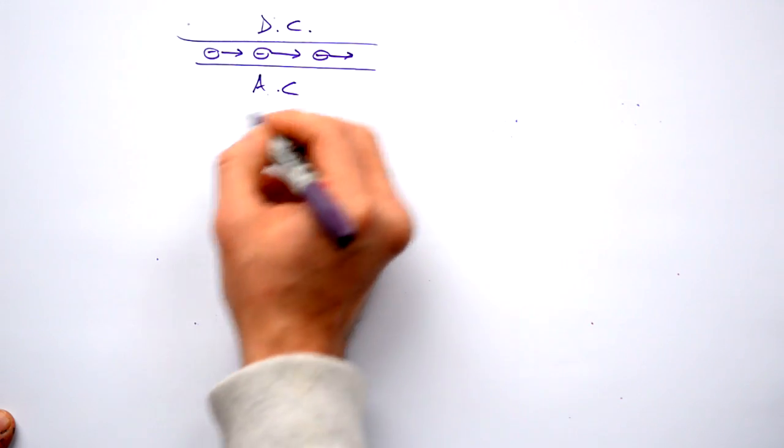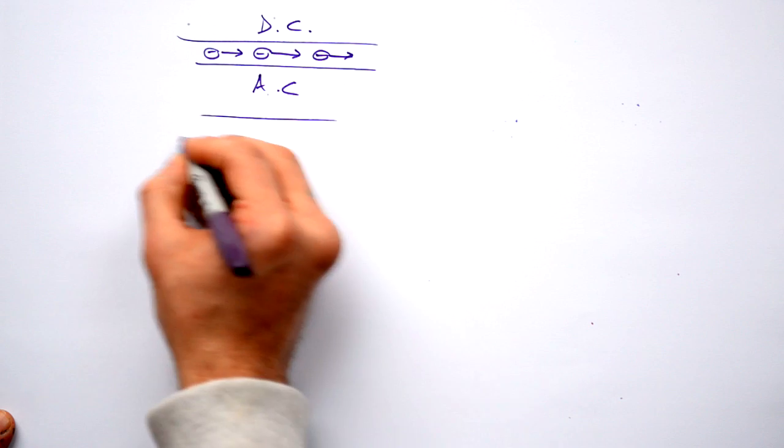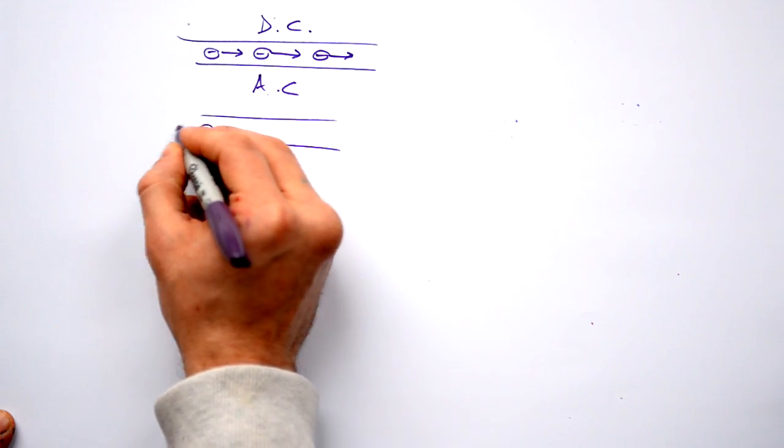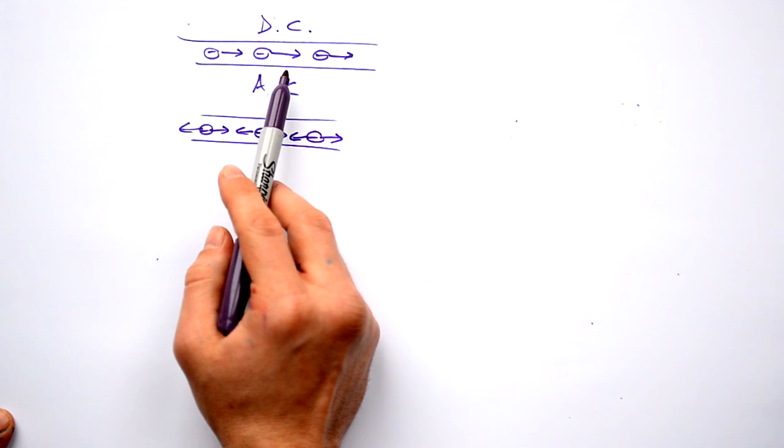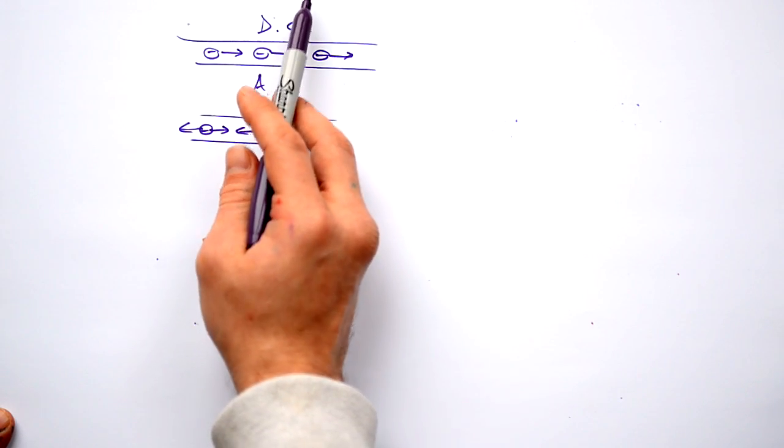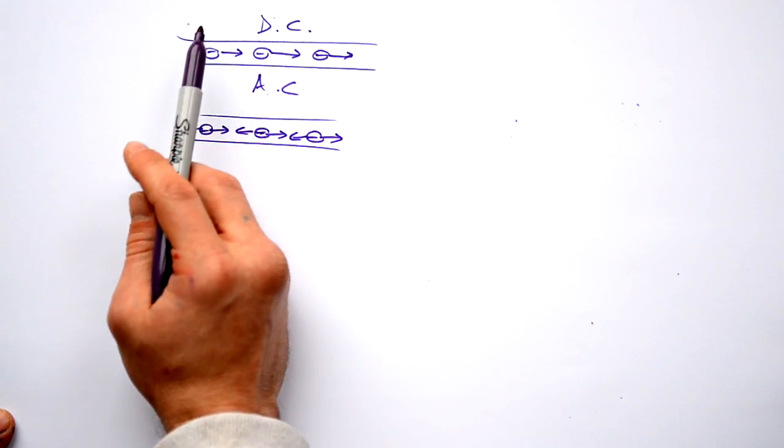That's direct current, but if you have AC alternating current, the electrons are wiggling back and forth. So for a battery that's supplying DC, the electrons will go from one end all the way back around to the other end.